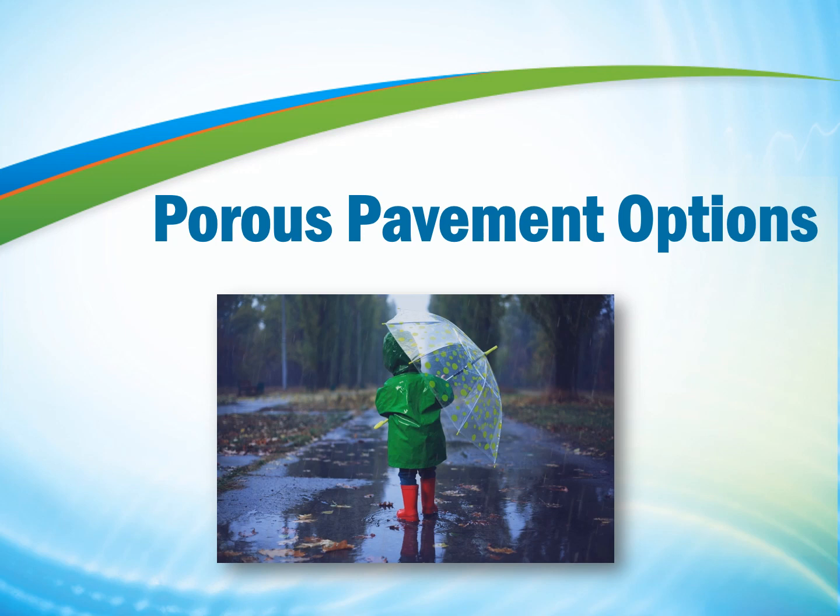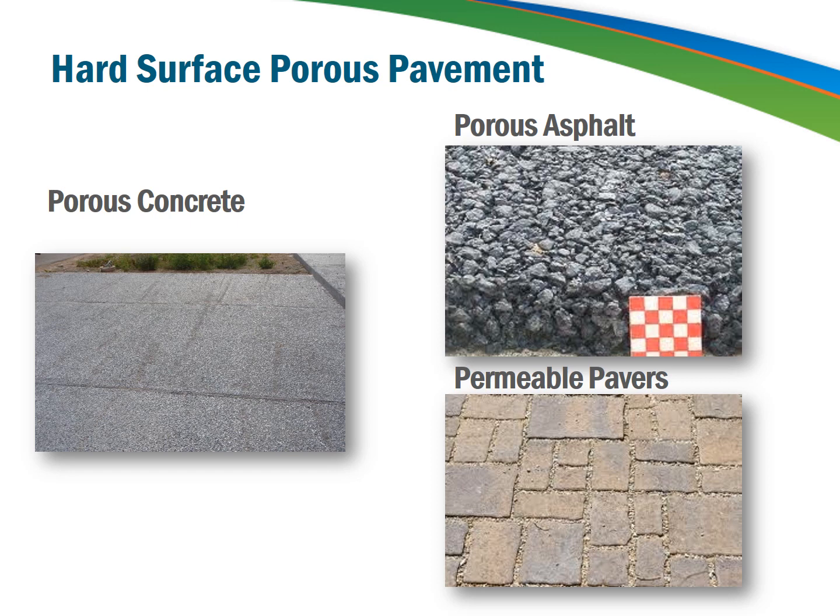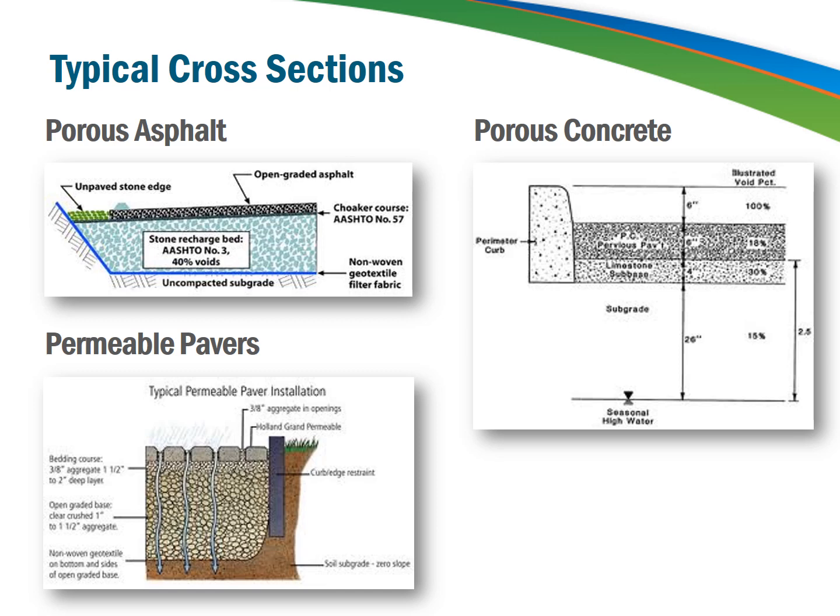There are a couple different porous pavement options available on the market today. The more traditional and probably the more well-known option is to use the pervious version of traditional pavements — porous concrete, porous asphalt, and paver blocks. These applications allow for normal traffic frequency use and they do have increased infiltration over their non-porous versions. However, all three of these methods have deeper cross sections and require a choker or a bedding course between the pavement and your open graded base layer — an extra installation step that adds costs and impedes infiltration.